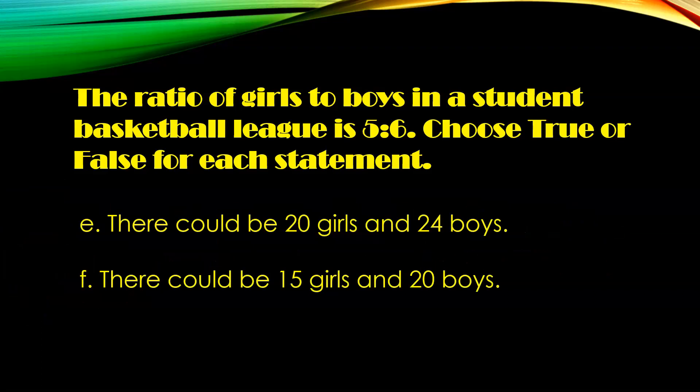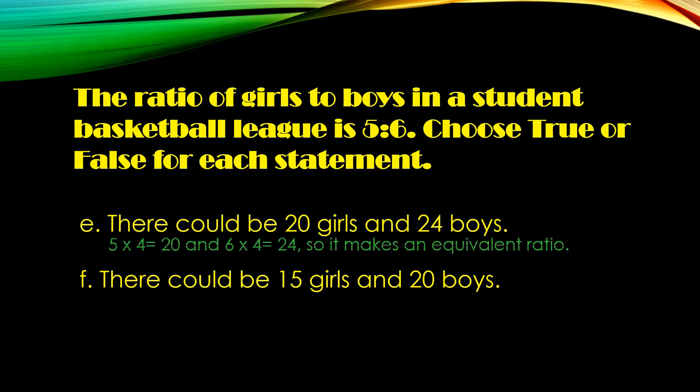Statement E: there could be 20 girls and 24 boys. If I put it as a fraction — 5 over 6 — and I want to see if it's equivalent to 20 over 24: 5 times 4 equals 20, and 6 times 4 equals 24. So just like an equivalent fraction, it makes it an equivalent ratio. True!